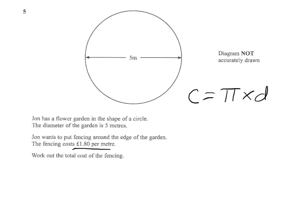So the full calculation then will be pi times 5 times 1.80, and that will give us the cost, which, when you round it off, comes to £28.27.